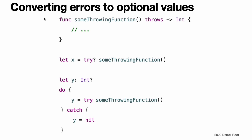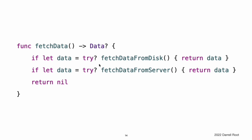Converting Errors to Optional Values. You use try? to handle an error by converting it to an optional value. If an error is thrown while evaluating the try? expression, the value of the expression is nil. For example, in this code, x and y have the same value and behavior. If some throwing function throws an error, the value of x and y is nil. Otherwise, the value of x and y is the value that the function returned. Note that x and y are an optional of whatever type the throwing function returns. Here the function returns an integer, so x and y are optional integers. Using try? lets you write concise error handling code when you want to handle all errors in the same way.